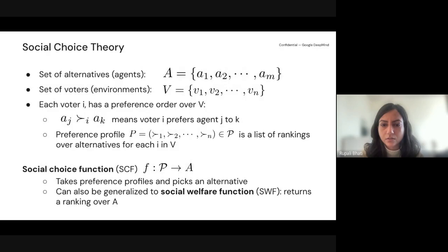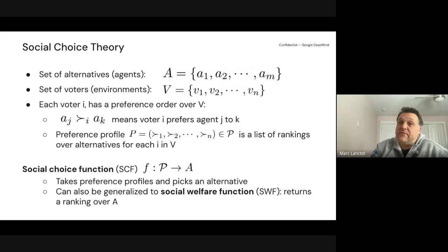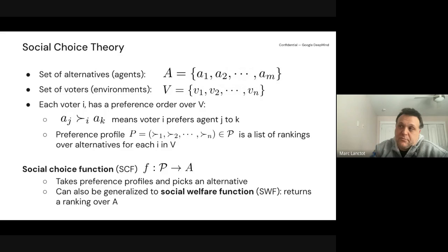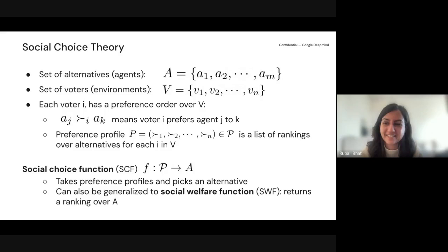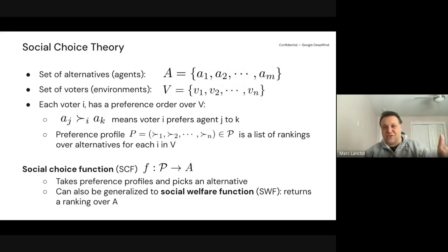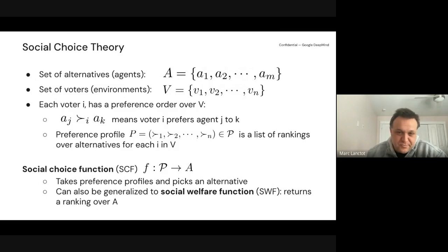A clarifying question: why are the number of agents and environments different? In the Atari example, there were eight different agents — the learning algorithms like DQN, prioritized dueling, dueling DQN, etc. — and the number of voters would be the number of games, in that case 54. Think of the voters as the tasks: when figuring out which agent is better than another, you're assessing them over tasks.